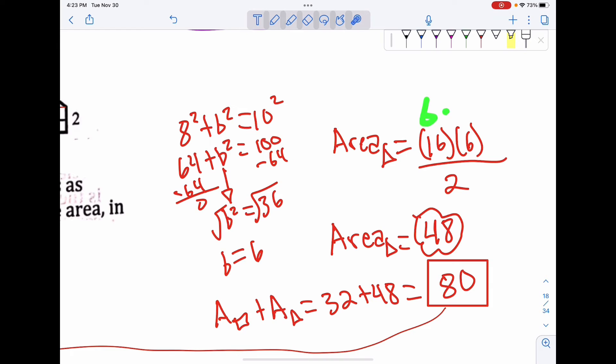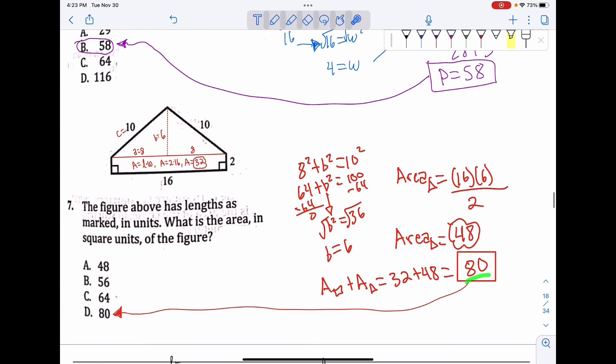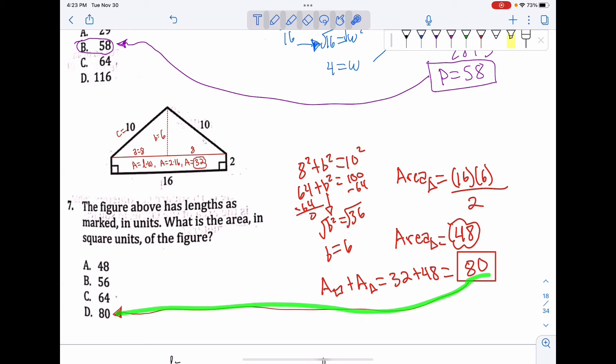Area of a triangle is base times height divided by 2. Base is 16, my height is 6. 16 times 6 divided by 2 is 48. My area of the rectangle plus my area of the triangle is 32 plus 48, which equals 80. That is my final answer: D, 80 square units.